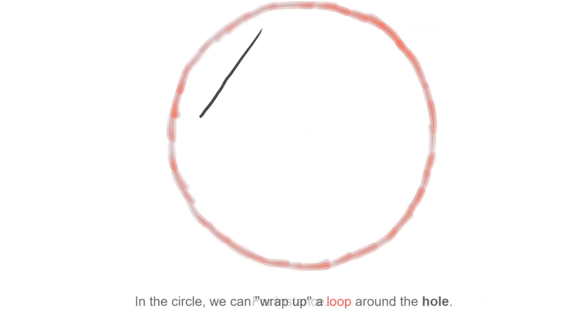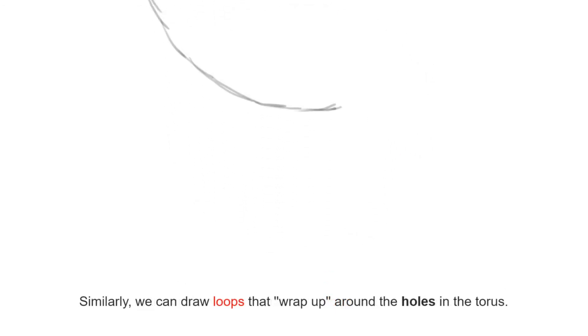Let us go quickly over some examples of this. The hole in S1, or in the annulus, can be detected by wrapping up a loop around it. Something very similar happens in the torus.